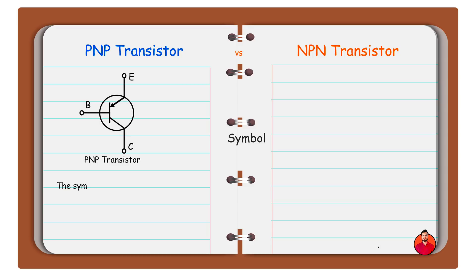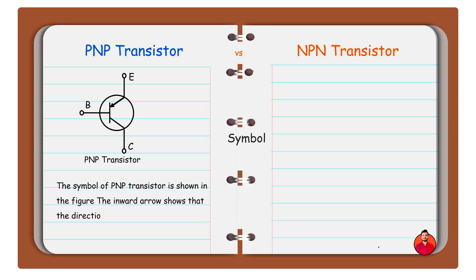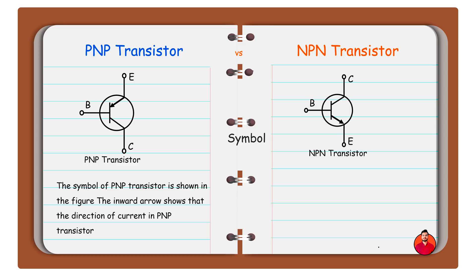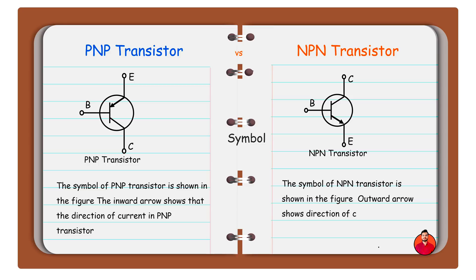The symbol of PNP transistor is shown in the figure. The inward arrow shows the direction of current in PNP transistor. The symbol of NPN transistor is also shown in the figure. The outward arrow shows direction of current in NPN transistor.